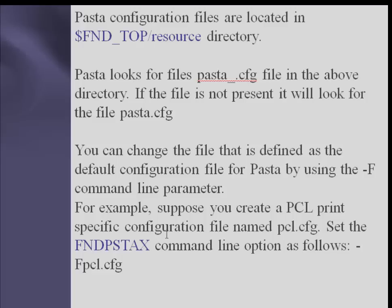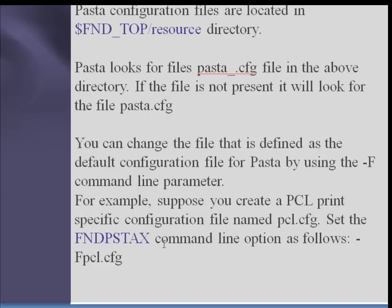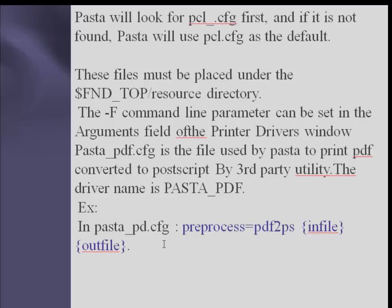For example, if you create a PCL print-specific configuration file named pcl.cfg, set the FND_PSTAX command line option. PASTA will look for pcl_<printer>.cfg first; if not found, PASTA will use pcl.cfg as default. These files must be located under the $FND_TOP/resource directory. The -f command line parameter can be set in the argument field of the printer drivers. The file pasta_pdf.cfg is used by PASTA to print PDF converted to PostScript by a third-party utility, and the driver name is pasta_pdf.